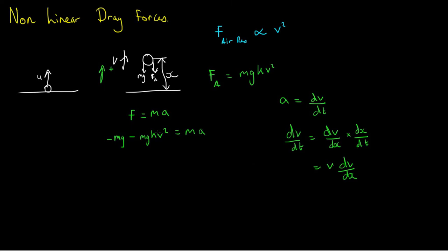And here we have an expression that relates velocity v and displacement x, which is what we wanted. So now if we substitute this in for a in our expression, we end up with, if I first cancel the m's, we end up with minus g minus g kv squared is equal to v dv dx.